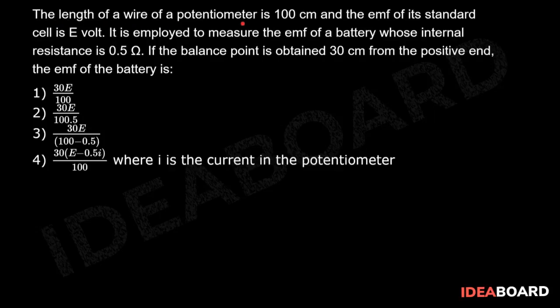The length of a wire of a potentiometer is 100 cm and the EMF of its standard cell is E volt. It is employed to measure the EMF of a battery whose internal resistance is 0.5 ohm. If the balance point is obtained 30 cm from the positive end, the EMF of the battery is: